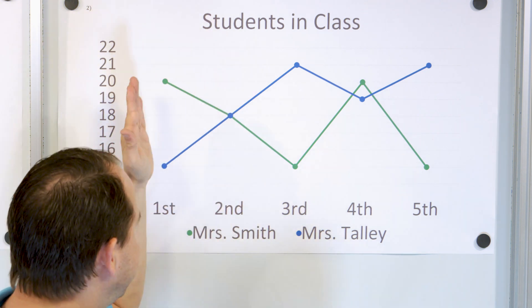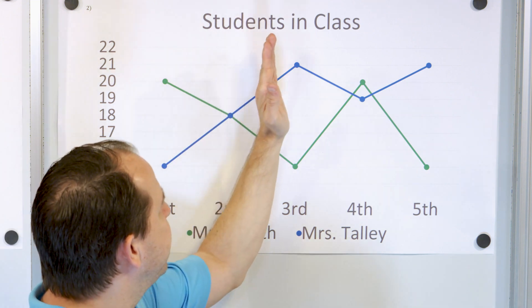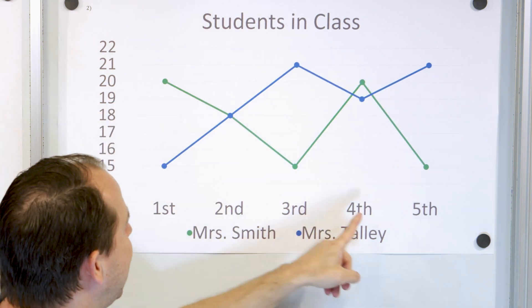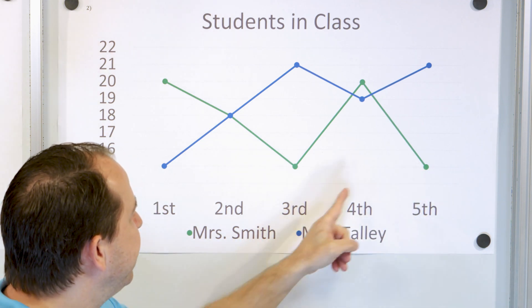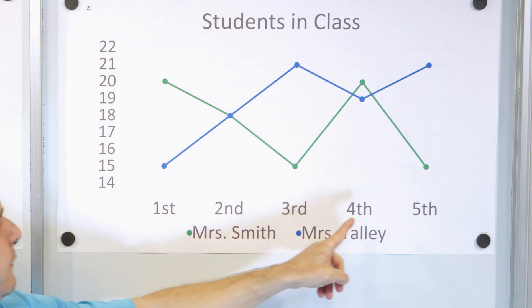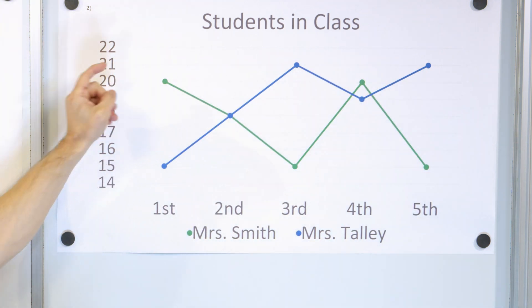So you go in time, or in this case, in period one, period two, period three, and just read up and see what's happening. Read up and see what is happening. You can see that by fifth period, Mrs. Smith, again, only has 15 students, but Mrs. Talley has 21.